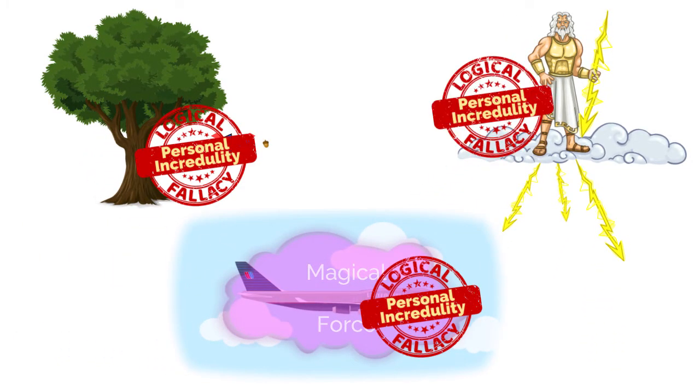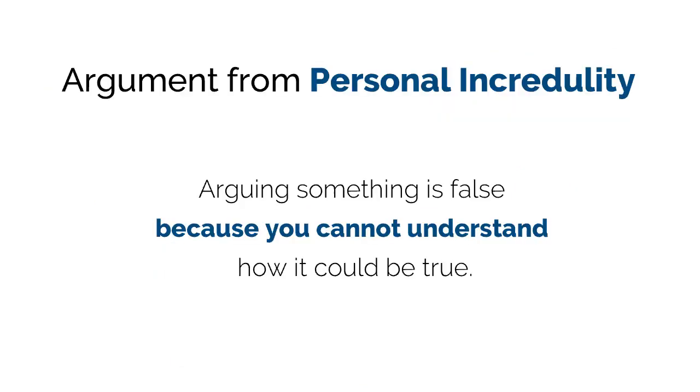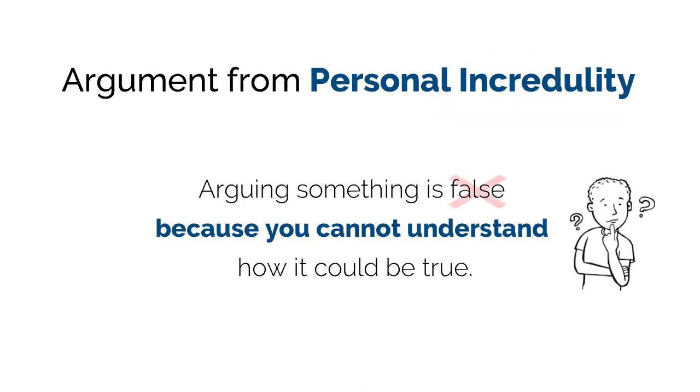These are all examples of an argument from personal incredulity fallacy, arguing that something is false because you cannot comprehend how it could be true.